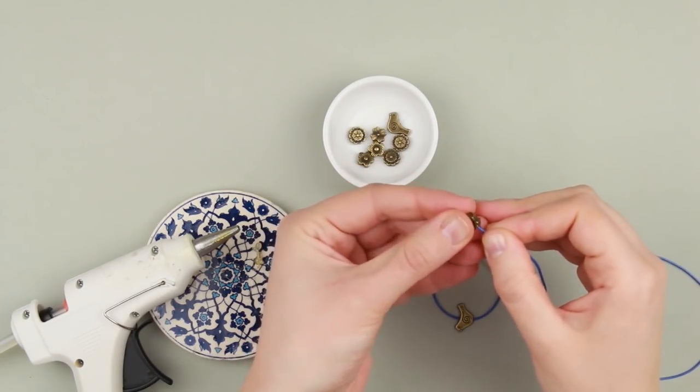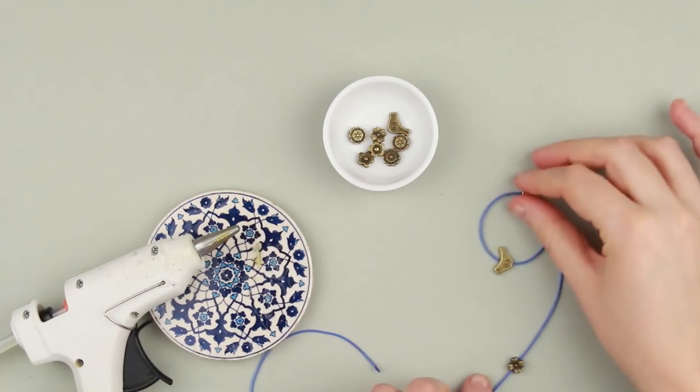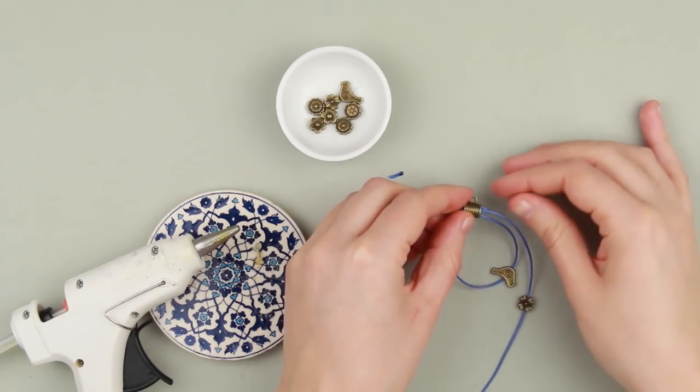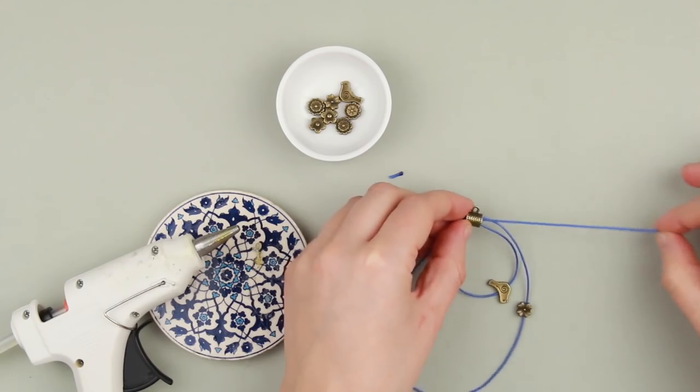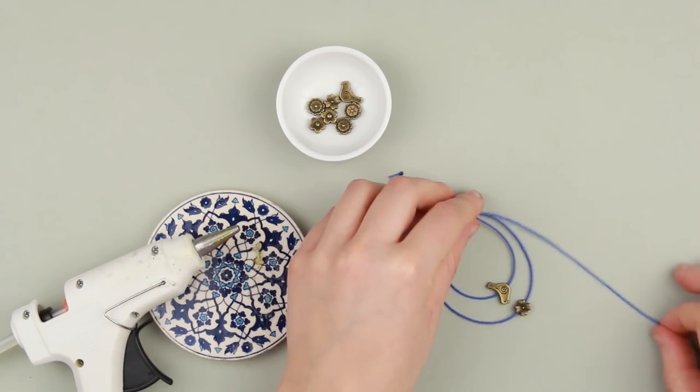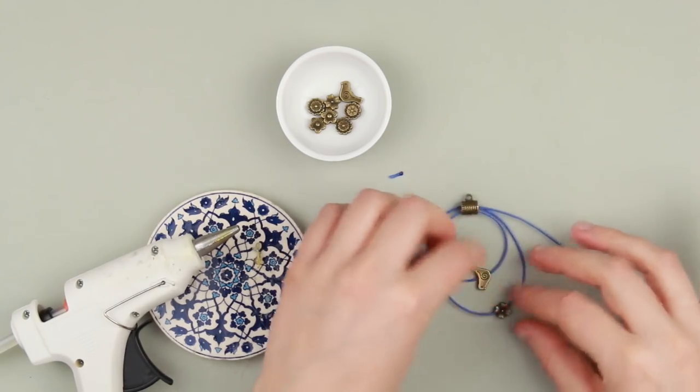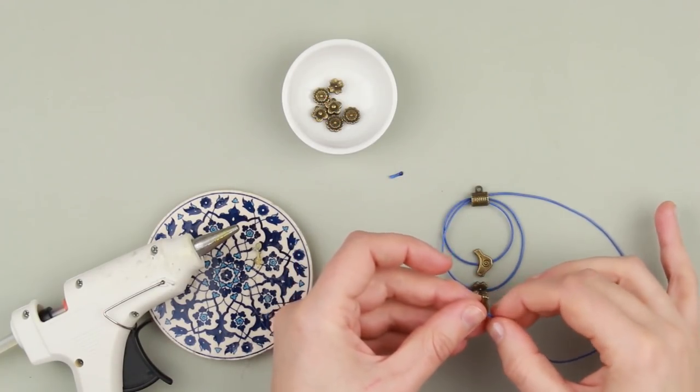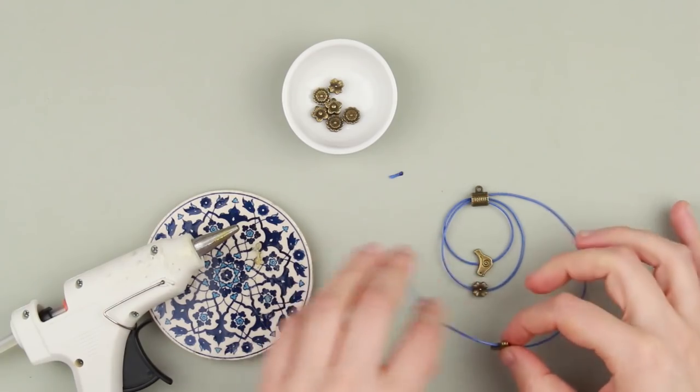Thread another charm and pull up. Pass the cord through the tube to make another ring bigger than the previous one. Continue in the same way. Keep in mind that the level should increase.